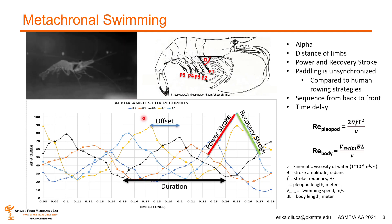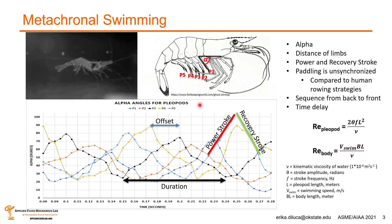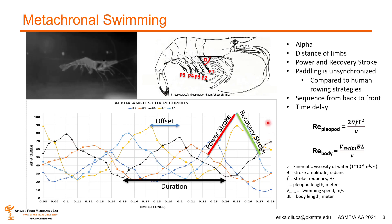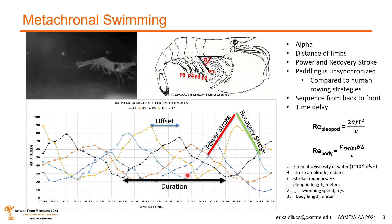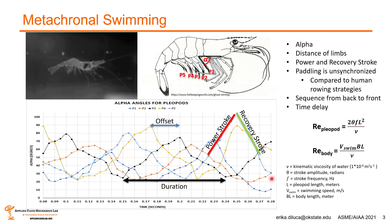As presented in the graph of alpha angles for pleopods versus time, you can see that we recorded two complete cycles for each limb of the swimming technique. For one cycle — from a low to high to low alpha — you can see what is called a power stroke.